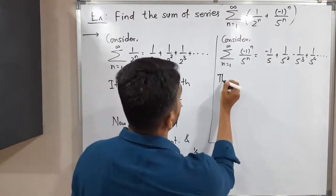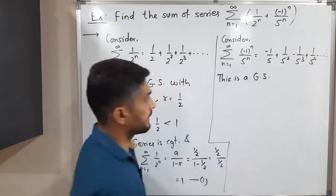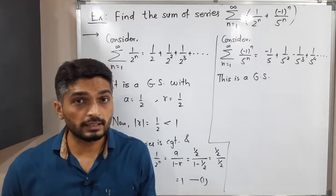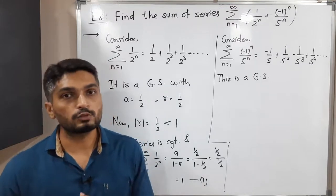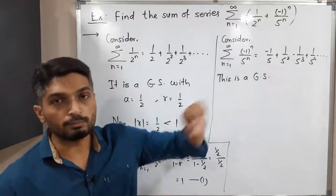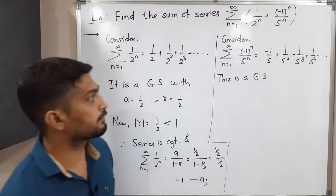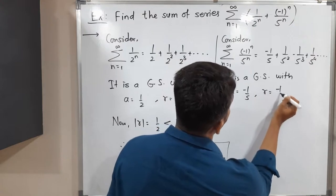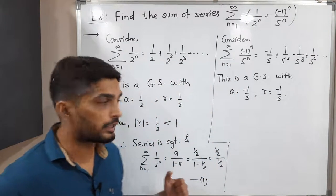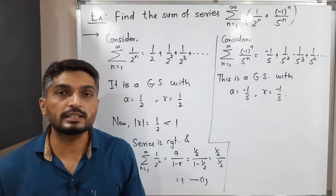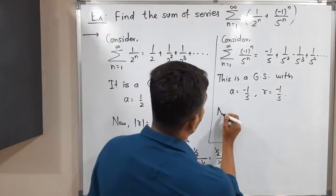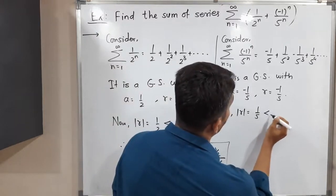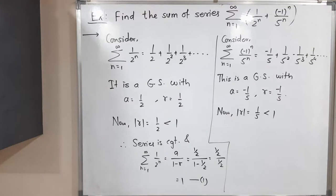This is also a geometric series, since multiplying the first term by -1/5 gives the second term, and multiplying the second term by -1/5 gives the next term, and so on. So this is a geometric series with first term -1/5 and common ratio -1/5. Since |r| = |-1/5| = 1/5, which is less than 1, the series is convergent.